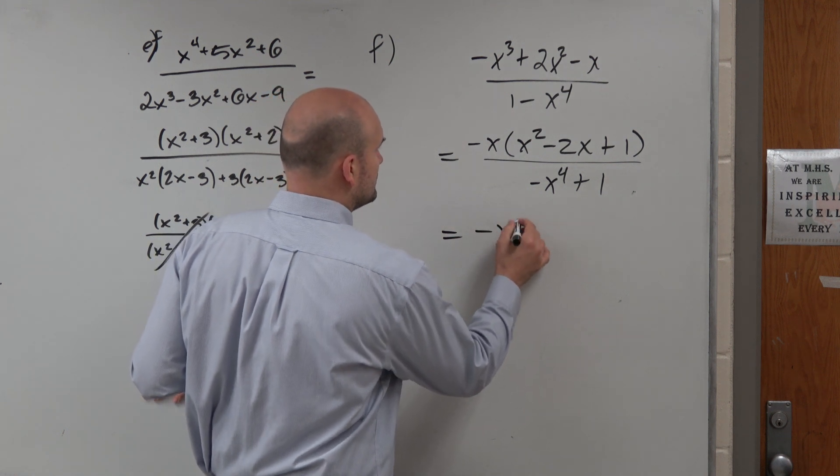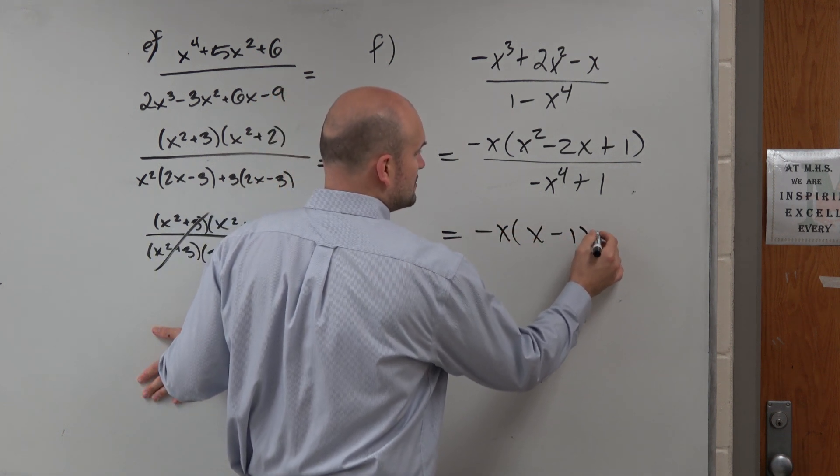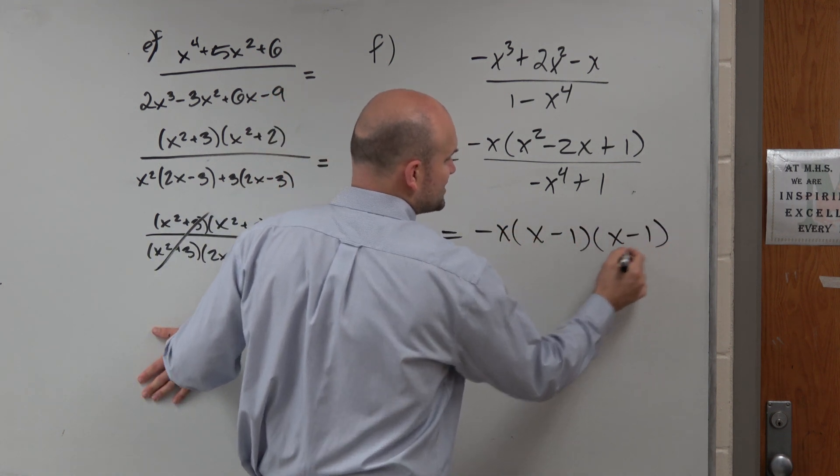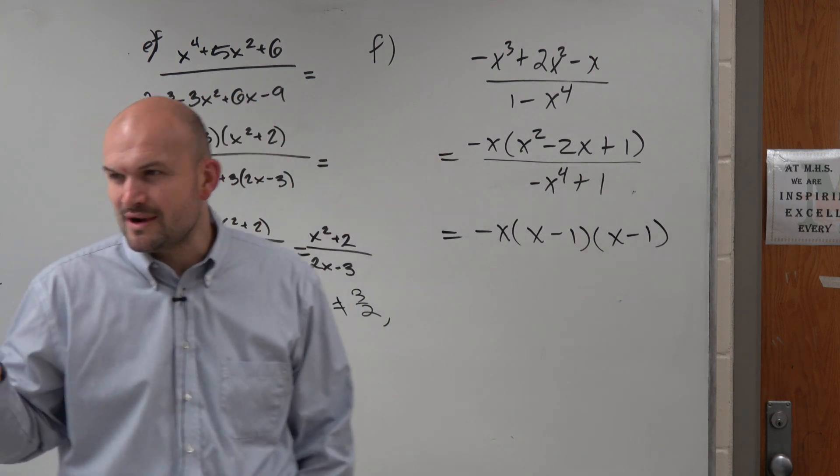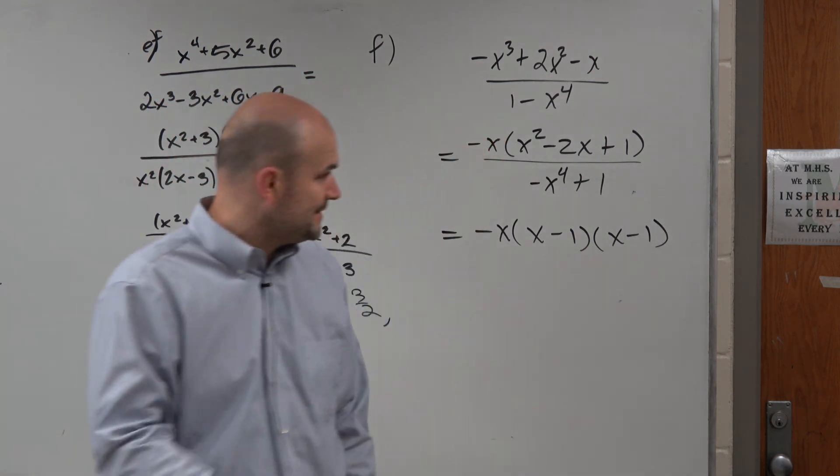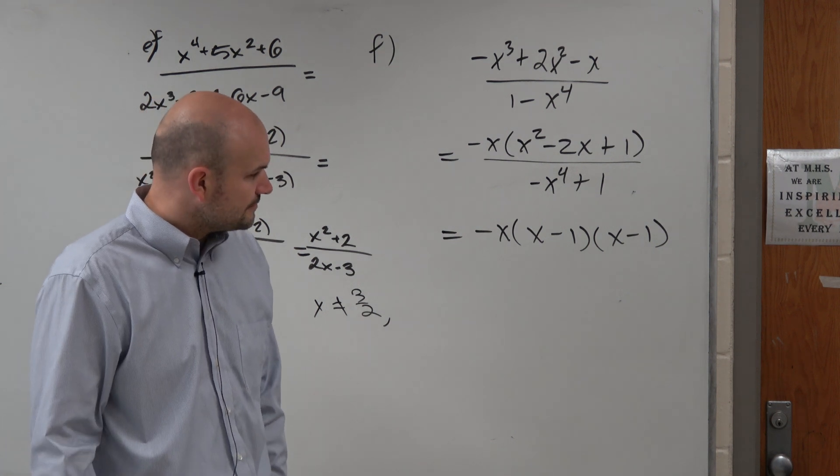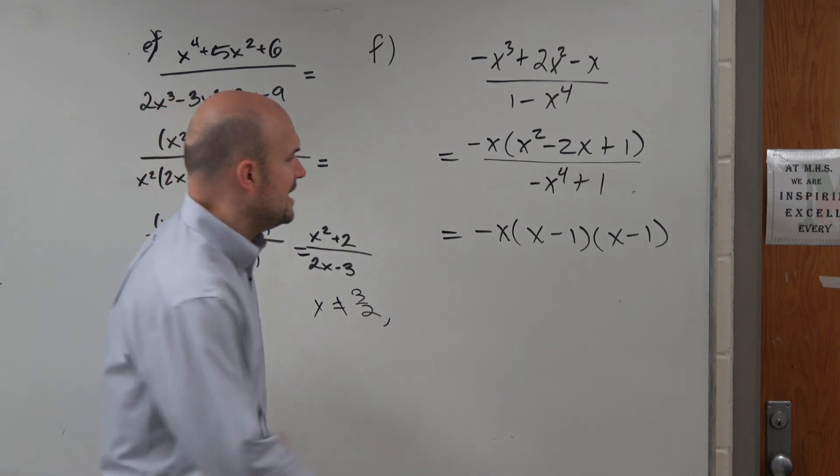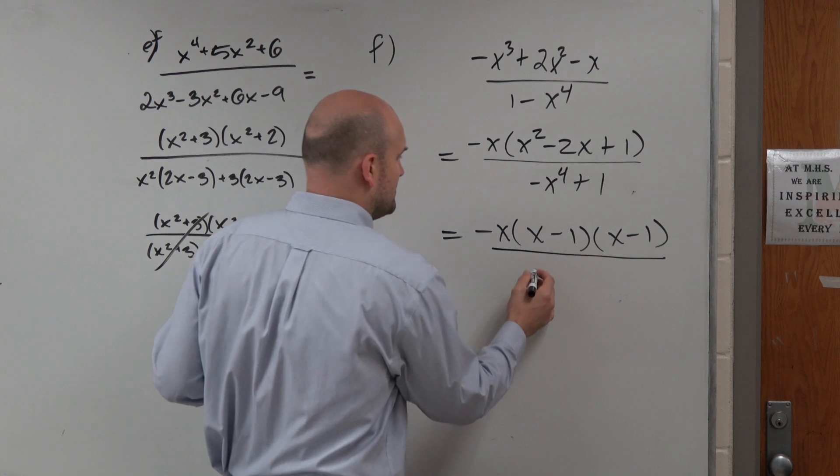That's a perfect square trinomial: x - 1 times x - 1. You could write it as squared, but I think when you're simplifying rational expressions, it's easier to have them just in factored form.